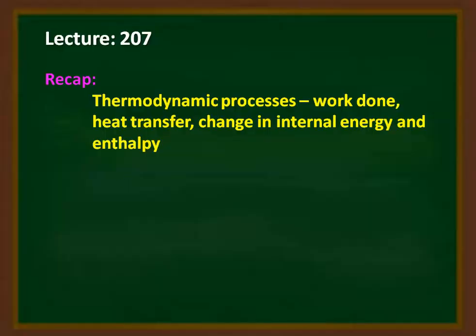We recap from the previous lecture. In lecture 206, we discussed thermodynamic processes — the application of the first law of thermodynamics to the closed system. We discussed processes like constant volume process, constant pressure process, constant temperature process, adiabatic process, and polytropic process. In all processes, we derived the work done, heat transfer, change in internal energy, and change in enthalpy.